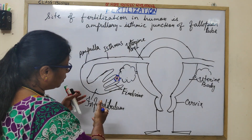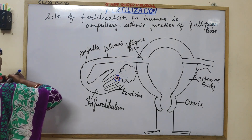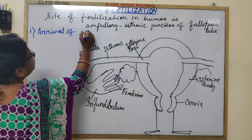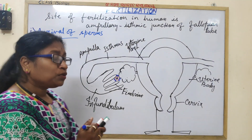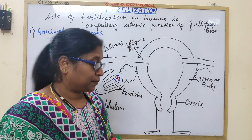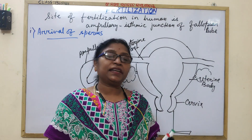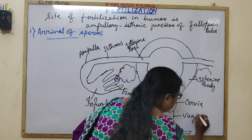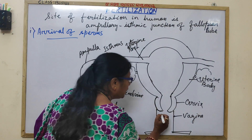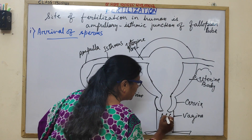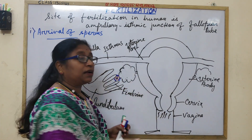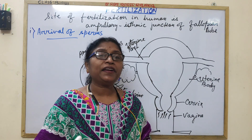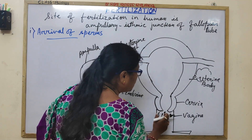Let us discuss the arrival of the gametes — arrival of spermatozoa or sperms. The sperms are deposited in the vagina of the female genital tract by the process of insemination — the deposition of semen containing sperms in the vagina by the copulatory organ.